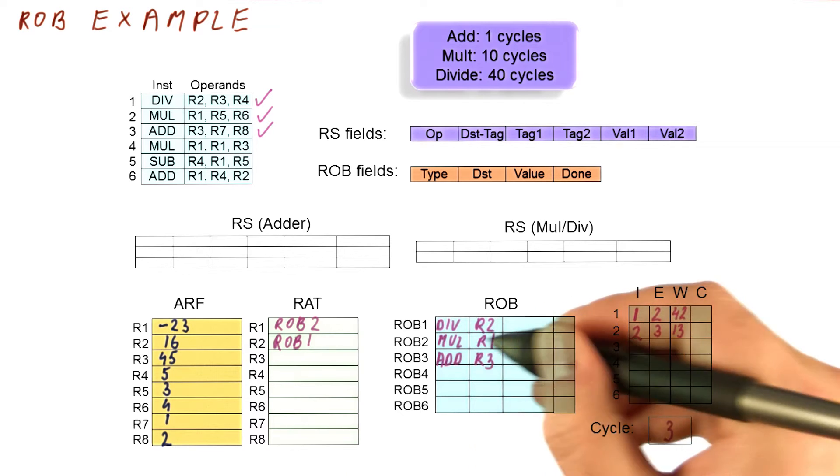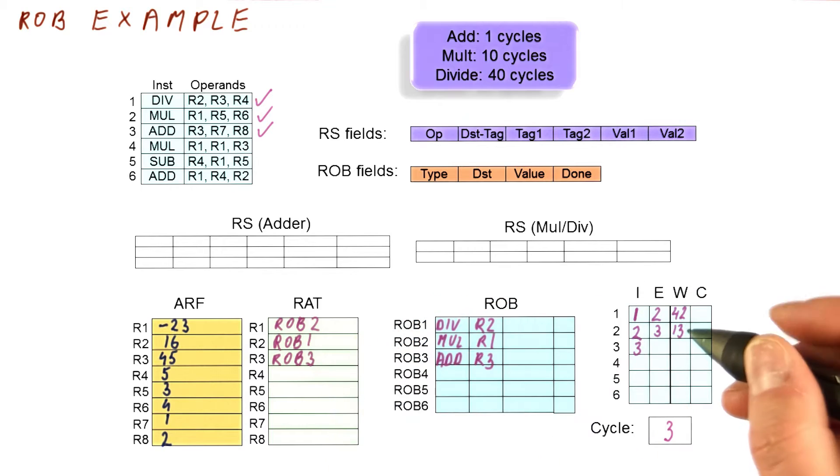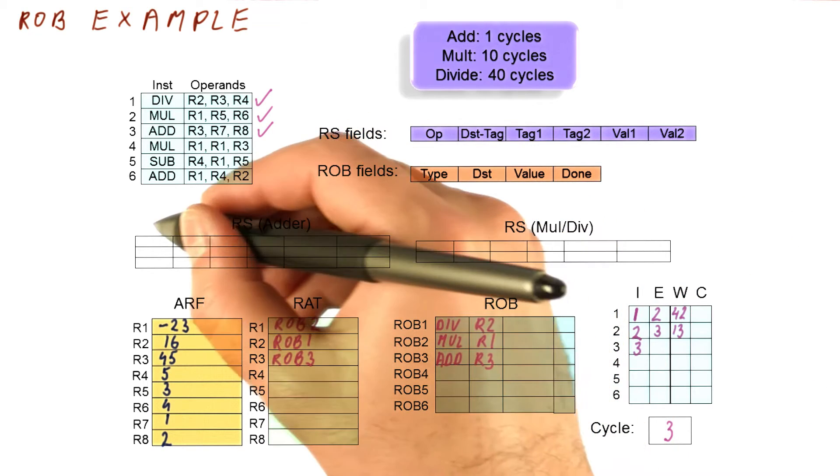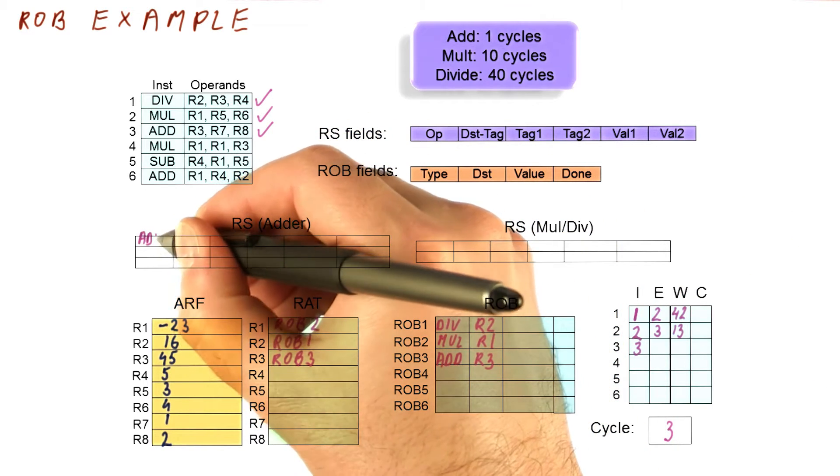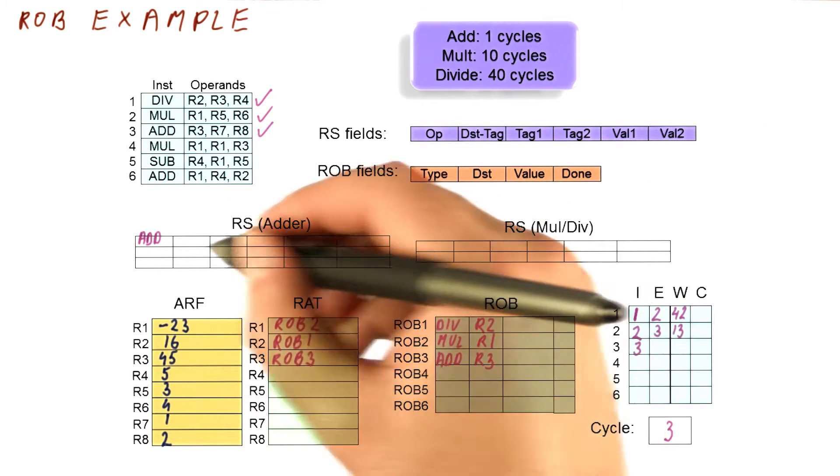It's an add. It writes to r3, r3 is now renamed to rob3. We mark here that we are issuing this add, and we put this add here. The name of the result is rob3, because we just put this instruction here.